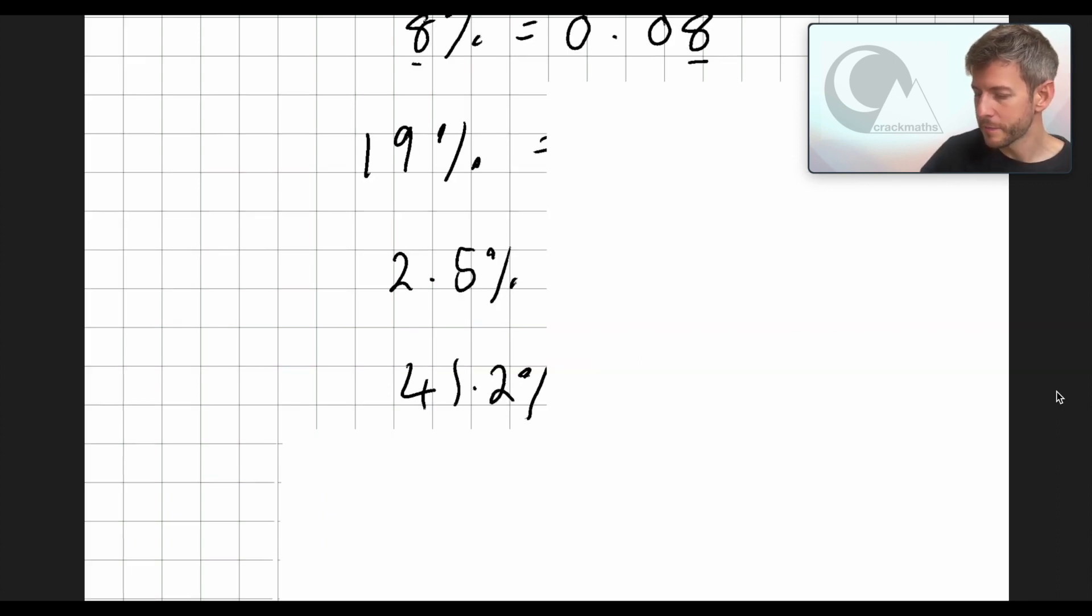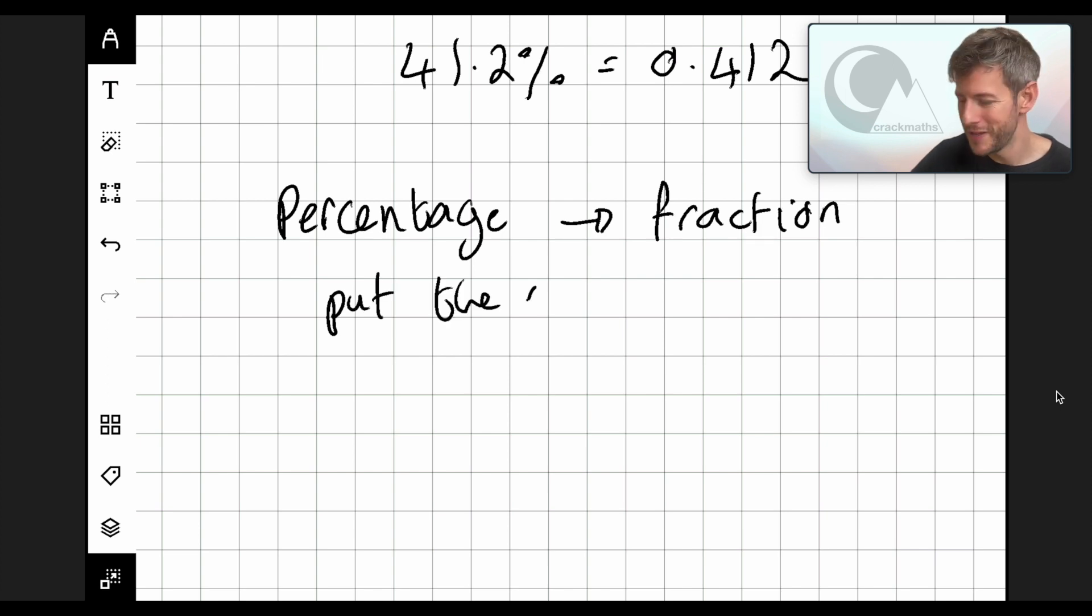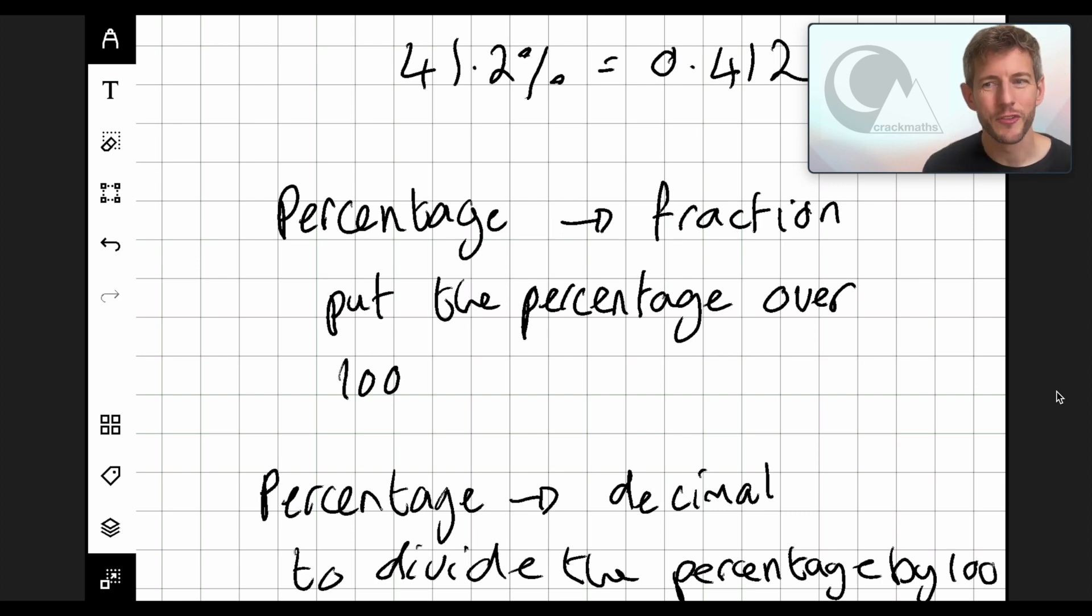So percentage to fraction is to put the number, is to put the percentage over 100. And then percentage to decimal is to divide the percentage by 100. OK, great. Let's go take a look at the Crack Math site to see some of these questions in context.